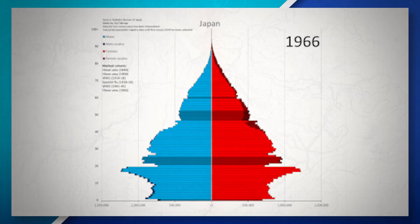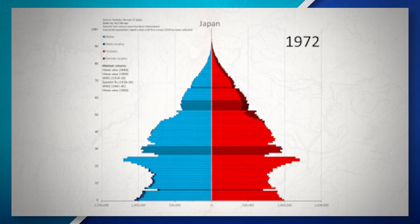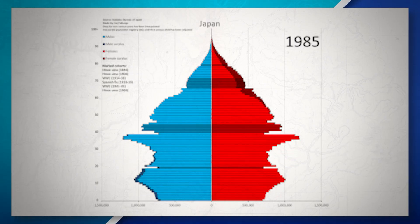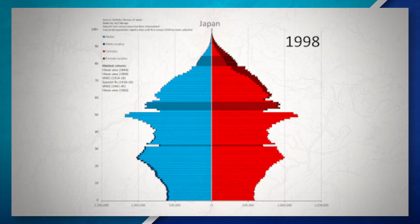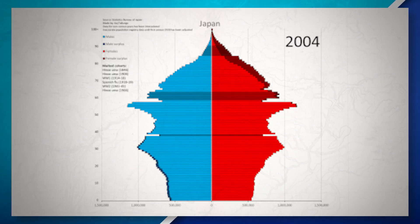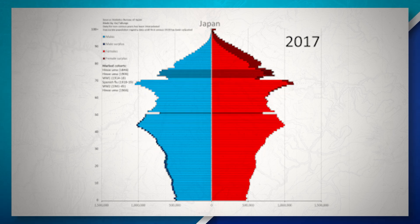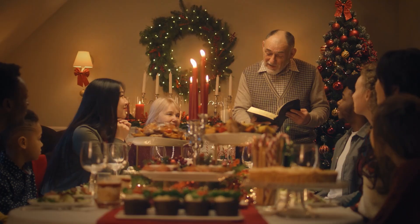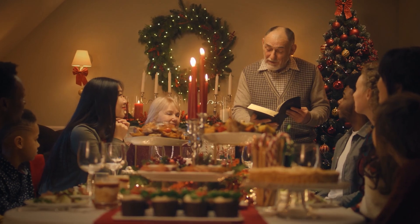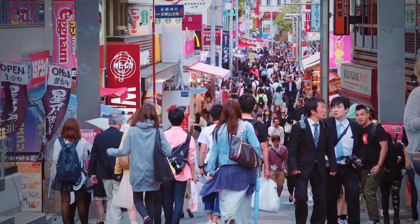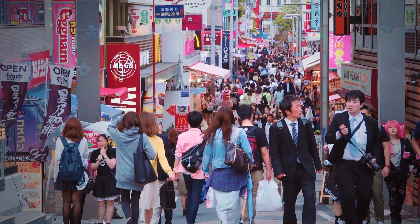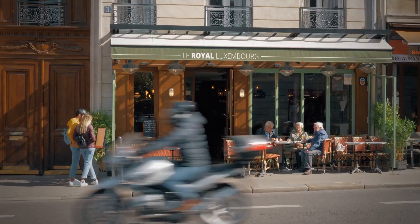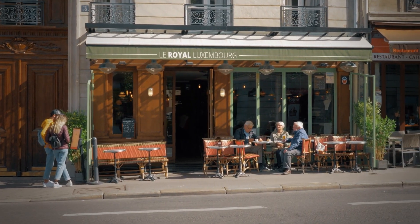Lastly, countries with advanced industrialization typically have a growth rate that is flat or possibly negative. This happens when both births and deaths are relatively low, which generally occurs due to shifts in culture, increased living costs, less of a need for larger families, and more opportunities for individuals in society — all of which results in the population remaining stable or possibly starting to decline.